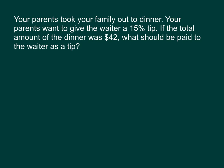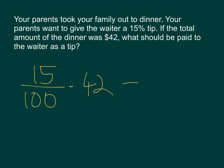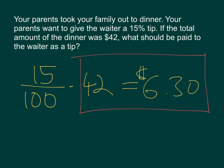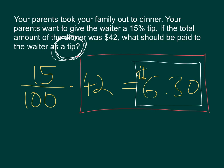Your parents took your family out to dinner. Your parents want to give the waiter a 15% tip. The total amount of the dinner was $42. What should be paid to the waiter? You want to know what 15% of 42 is, because that's what you want to pay as a tip. So, if I take 15% multiplied by 42, I get $6.30. It doesn't ask me what the total bill is, just what should be paid to the waiter as a tip. If it asked what the total amount was, I would add $6.30 to $42. But if it just asks what should be paid as a tip, that's $6.30.